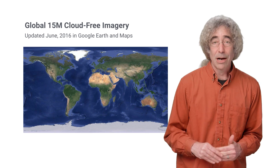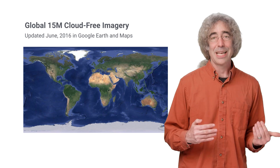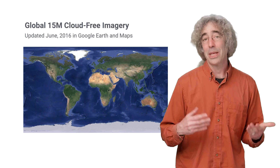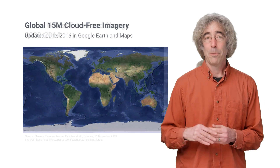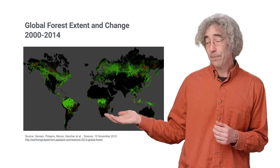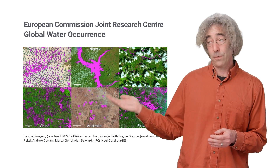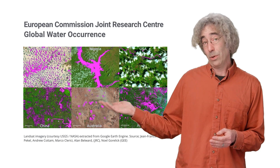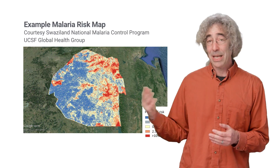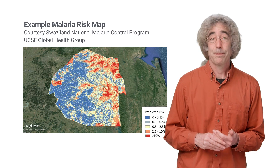Now we're providing the same tools and APIs to developers and researchers outside of Google, who've been using it to do things like monitor forest cover change globally, detect surface water also globally, and estimate the risk of infectious disease outbreaks.